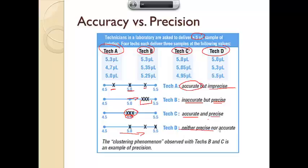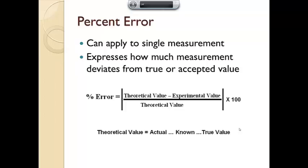So how far off are we when we take our measurements? That can be calculated with the percent error, and it can apply to a single measurement. It expresses how much the measurement deviates from the true or accepted value. It takes the theoretical value, which is either the actual or the known or the true value. You'll see it written several different ways, minus the experimental value, which is what you got, divided by what you were supposed to get, times 100.